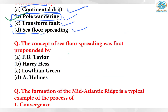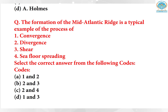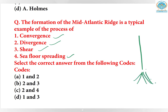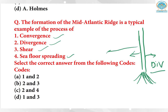Another question: the concept of seafloor spreading was first propounded by Harry Hess. The formation of the Mid-Atlantic Ridge is a typical example of which process — convergence, divergence, shear, or seafloor spreading? We saw that a ridge forms due to volcanic activity from inside, with plates moving apart — that is divergence — and because of this divergence, the seafloor spreads. So the answer is divergence and seafloor spreading.